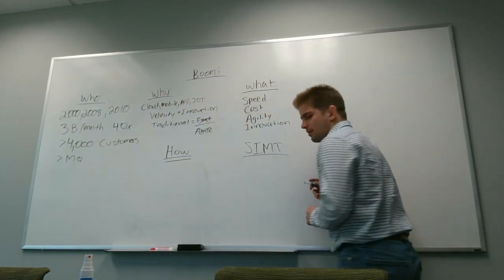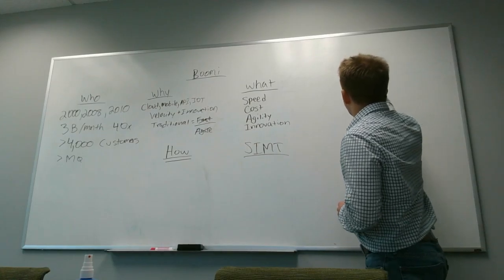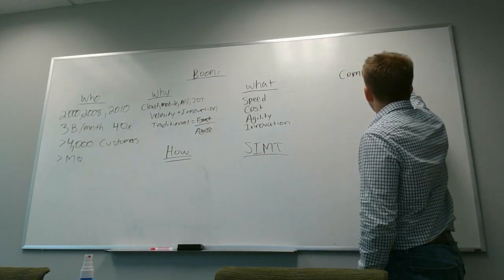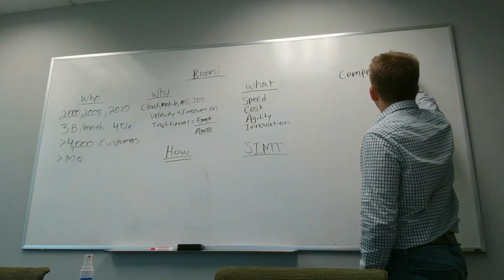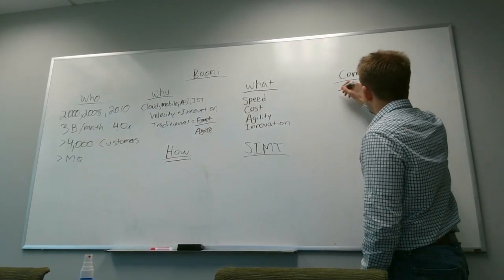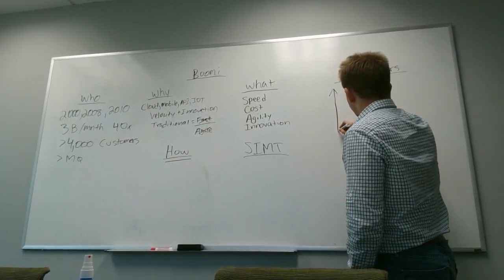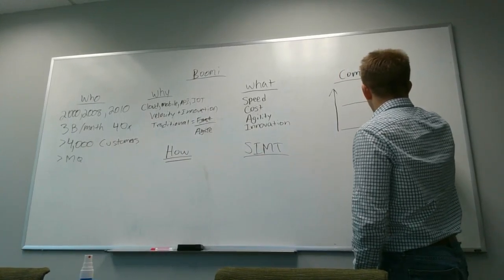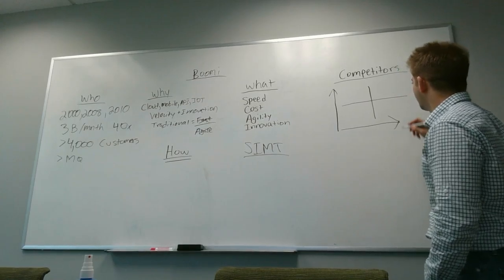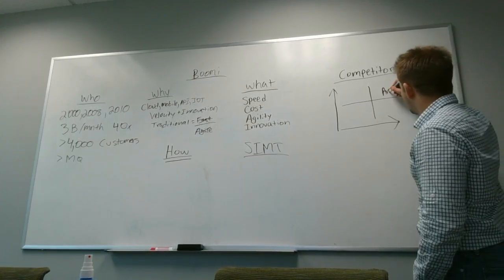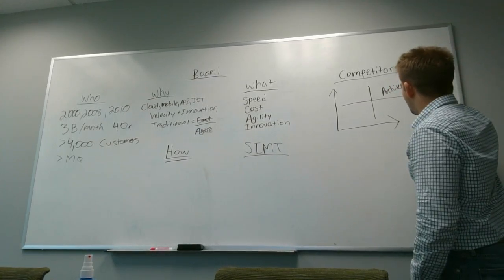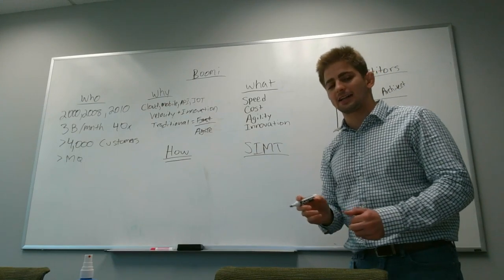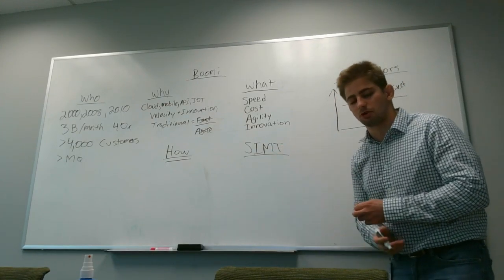Let's first take a look at our competitors in the Gartner Magic Quadrant. The leaders have a strong customer base. They've been around for a long time, but they lack the architecture. They lack the single-instance, multi-tenant platform.